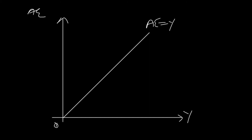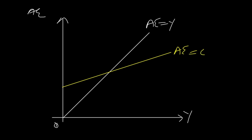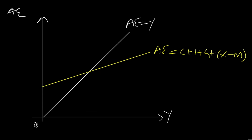In four sector economy, aggregate expenditure is C plus I plus G. Since it is a four sector economy, we also add X minus M, net exports. Equilibrium takes place at point E where national income equilibrium is Y1. Again, the area before E is the inflationary gap and the area after E is the deflationary gap.